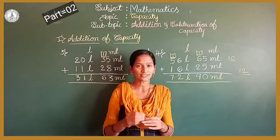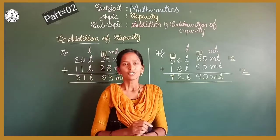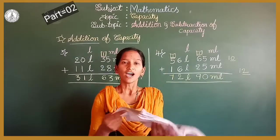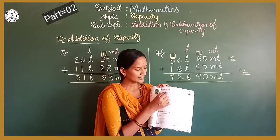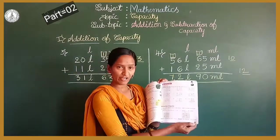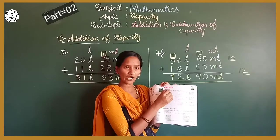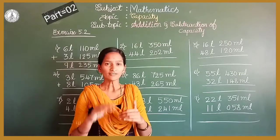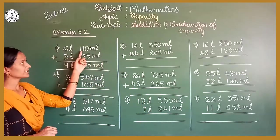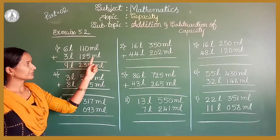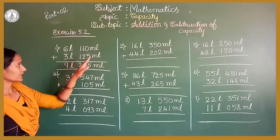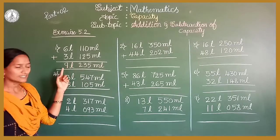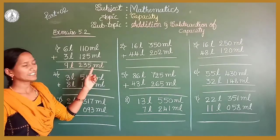Now you learnt how to add numbers in litres as well as in millilitres. Now I will go to the textbook activity. All of you open your textbook and open page number 125. This is exercise number 5.2 — the headline is 'Add the following.' The first problem: 6 litres 110 millilitres plus 3 litres 125 millilitres. The answer is 9 litres 235 millilitres.